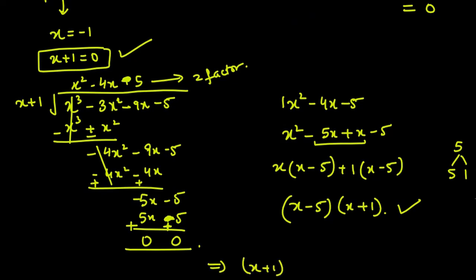So we have x minus 5 and x plus 1 as two more factors. The first factor we already had was x plus 1. So x plus 1 appears twice. Our final answer is (x + 1)(x + 1)(x minus 5), which can be simplified as (x + 1)² (x minus 5). That's the complete answer for the second part.